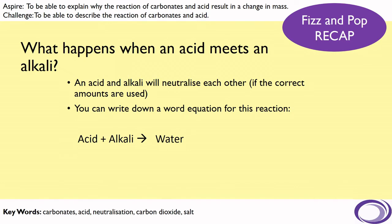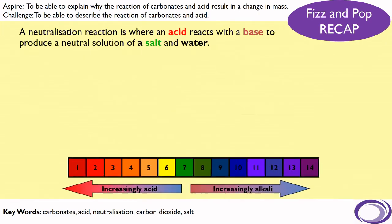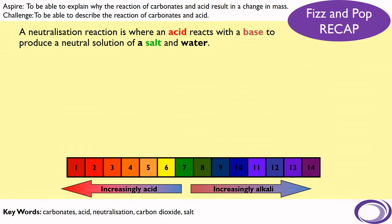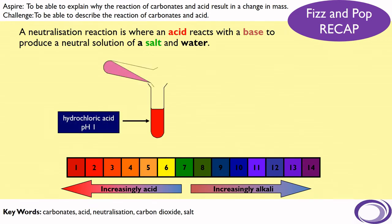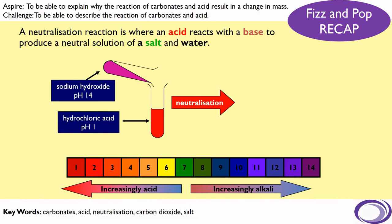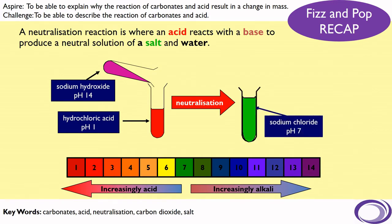Now, when an acid meets an alkali, they neutralize each other and they can produce water and a salt. A neutralization reaction is where an acid reacts with a base to produce a neutral solution of salt and water. So if hydrochloric acid reacts with sodium hydroxide, sodium chloride solution, which is pH 7, would be formed.